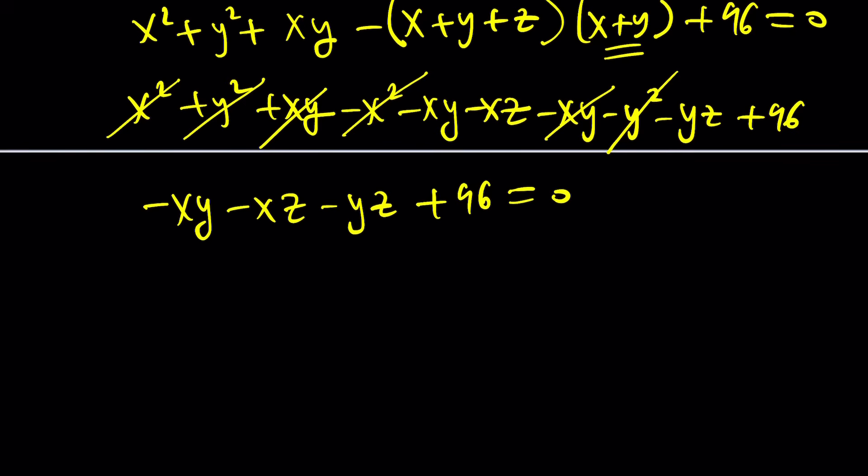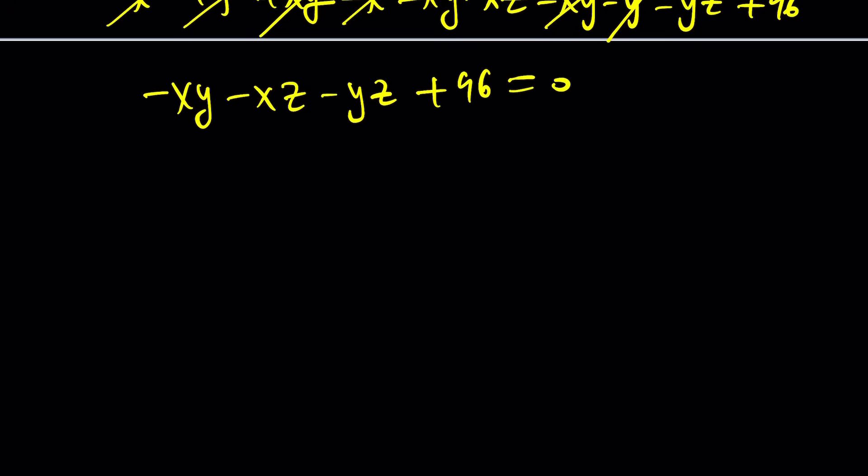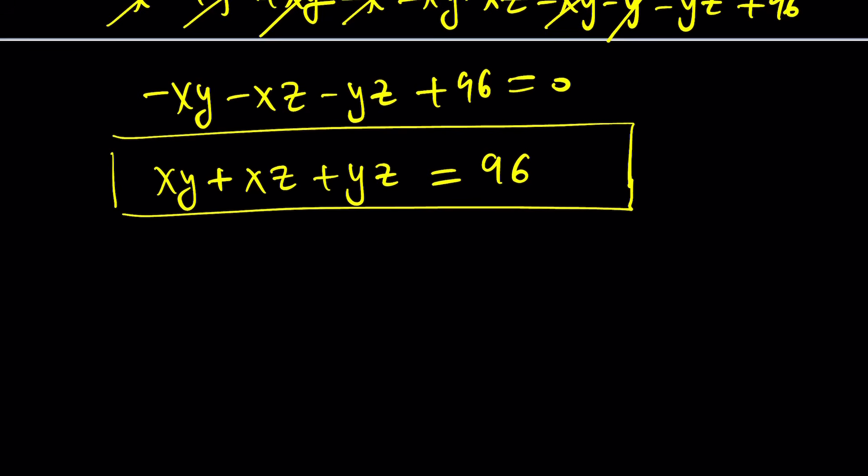Let's see what that looks like. We have negative xy minus xz minus yz plus 96 equals zero. Now, if you go ahead and take all these variable terms and put them on the other side, in other words, if you negate everything, we're going to get xy plus xz plus yz equals 96. Now, is this helpful at all? I don't know, but I just found it.